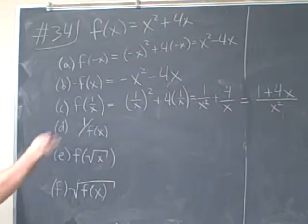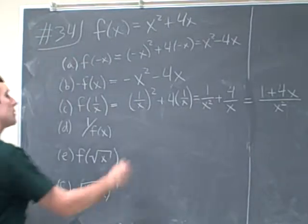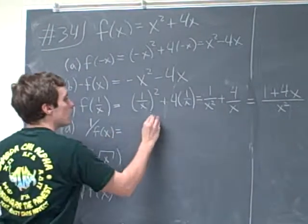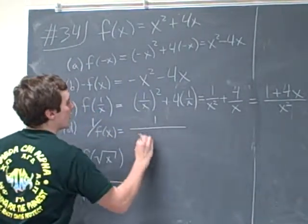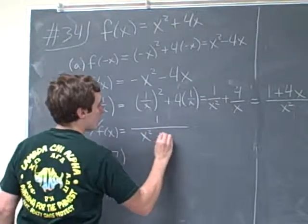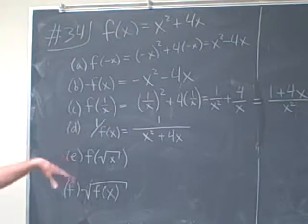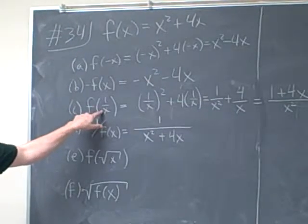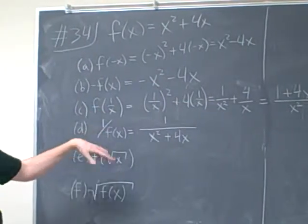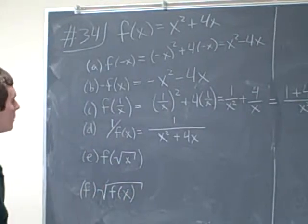Then we have to do 1 over the entire function f of x. And this will give us 1 over x squared plus 4x. I think what they're trying to do here is show you that f of 1 over x and 1 over f of x are not the same thing.